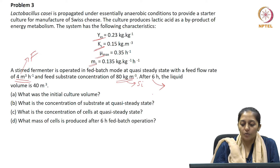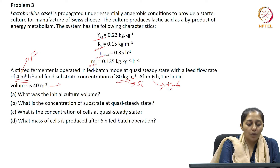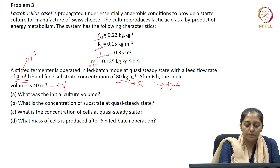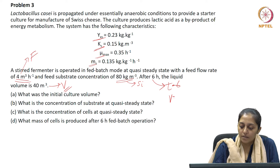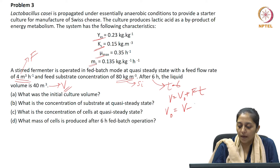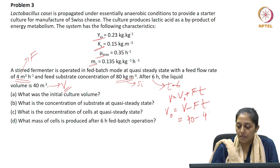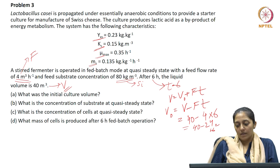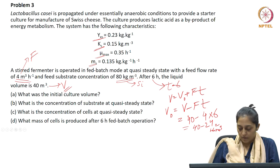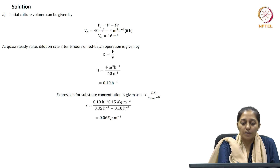After 6 hours the liquid volume is 40 metre cube. What is the initial culture volume? For a constant feed flow rate system, V equals V0 plus F times T. Therefore V0 equals V minus F times T, which is 40 minus (4 times 6), giving V0 equals 16 metre cube.